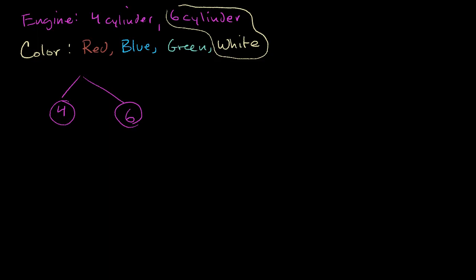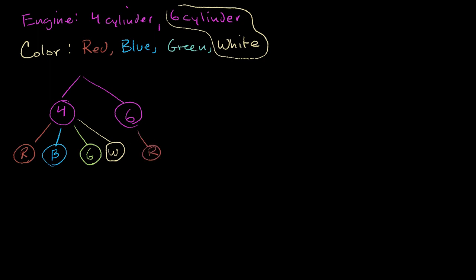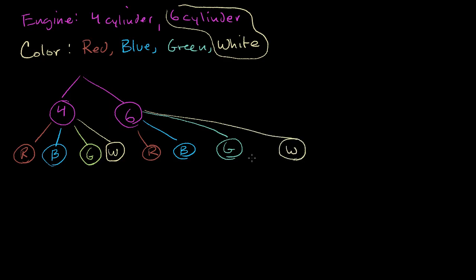If you got a four-cylinder engine, you're either going to get red, blue, green, or white. And if you got a six-cylinder engine, once again you're either going to get red, blue, green, or white. So how many possible outcomes are there? You can just count the leaves of this tree diagram: one, two, three, four, five, six, seven, eight possible outcomes. That makes sense — two possible engines times four possible colors gives two times four, one group of four and two groups of four.